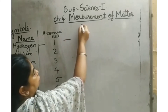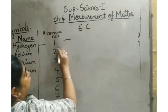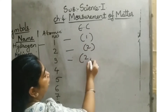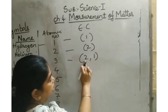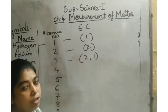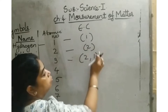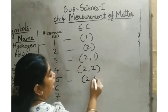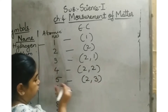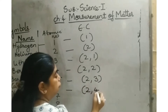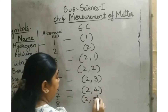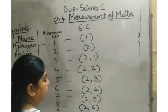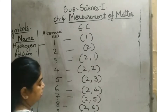Let us write the electronic configurations. Hydrogen: 1. Helium: 2. Lithium: 2,1. Beryllium: 2,2 — note the K-shell should have only 2 electrons; extra electrons move to the next shell. Boron: 2,3. Carbon: 2,4. Nitrogen: 2,5. Oxygen: 2,6. Fluorine: 2,7. And neon is 2,8.